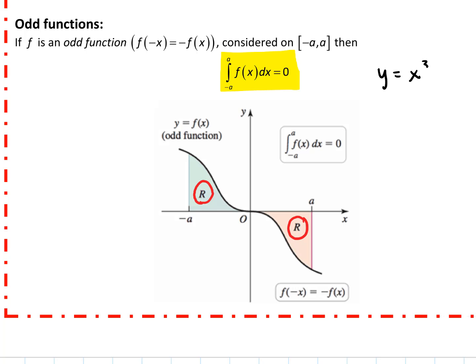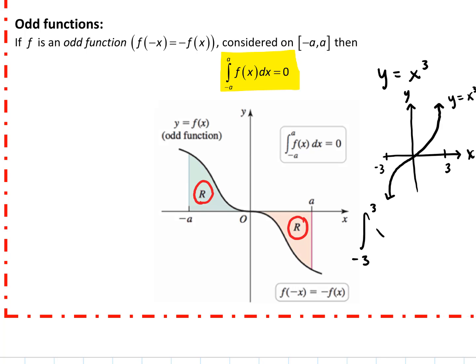The easiest odd function to look at visually is x cubed. If we were to look at x cubed, symmetric through the origin, from negative 3 to 3 — just like we did for x squared — integrating from negative 3 to 3 of x cubed dx is exactly equal to 0, because the same amount of area is below the x-axis as above. Those two areas cancel each other out; they're equal and opposite in magnitude, and so they equal 0. That gives us this really nice application of symmetry within definite integrals.